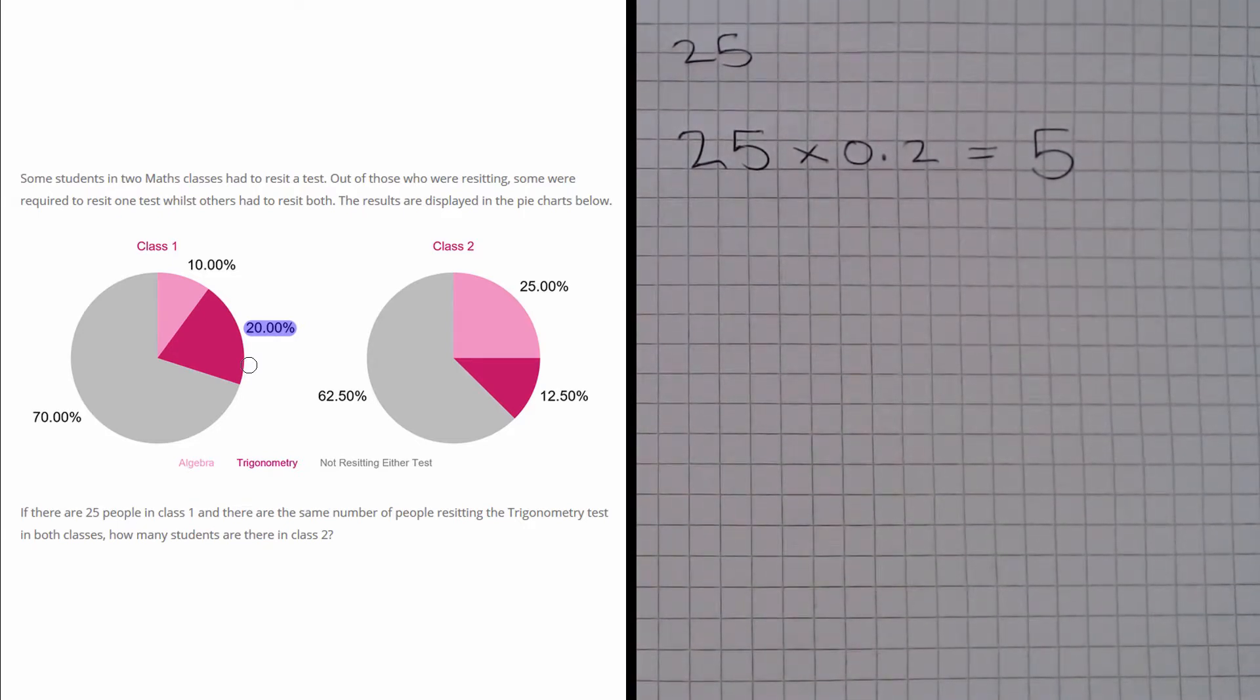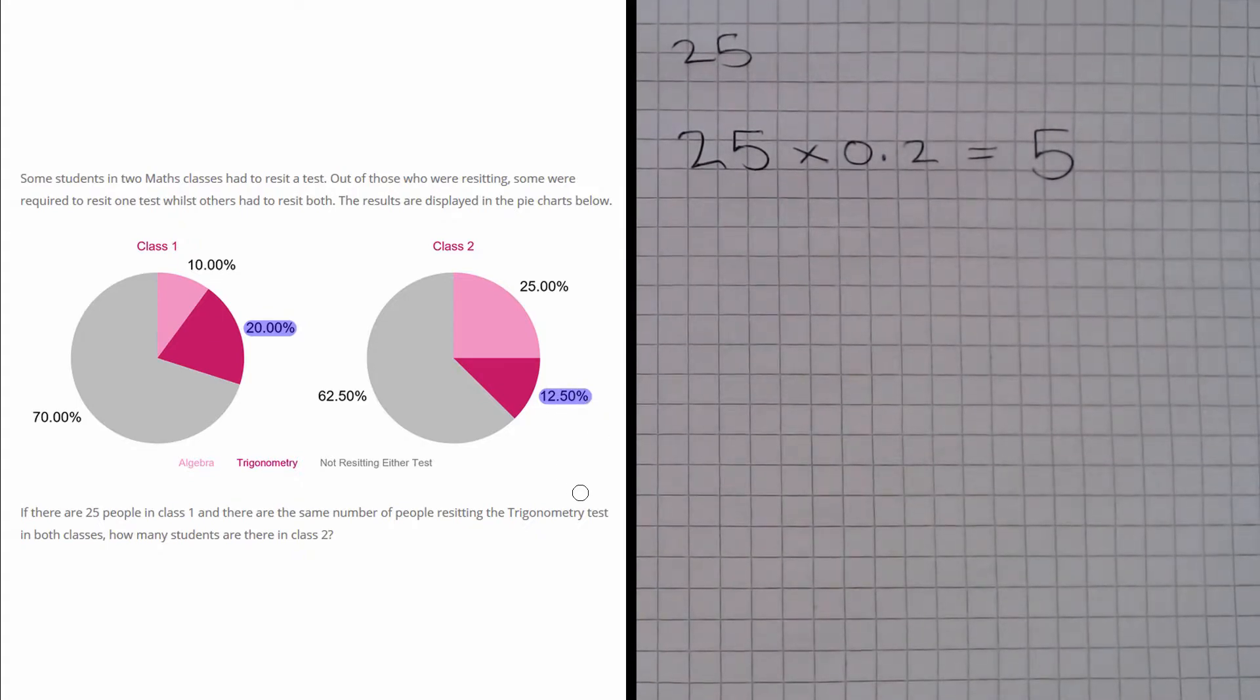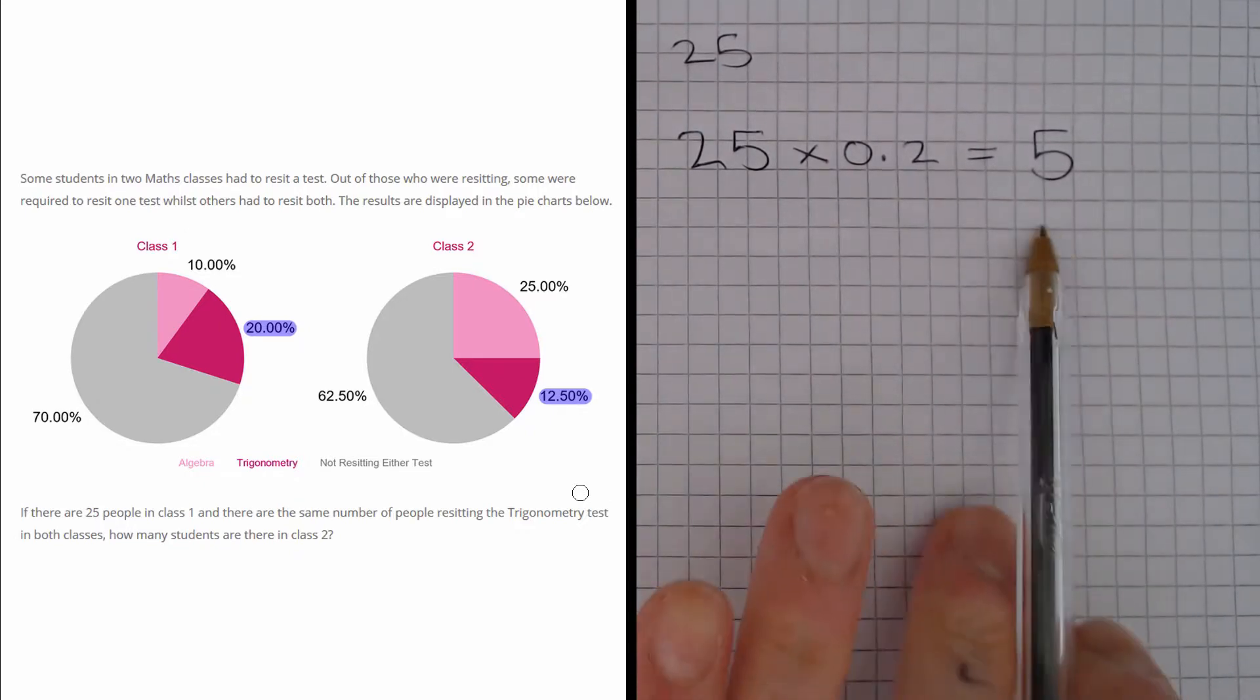But this is all the information we need, because if we have a look at this pie chart again for class 2, we know that 12.5% of the people in class 2 are resitting trigonometry. And we also know that 12.5% of the people in class 2 gives us 5.